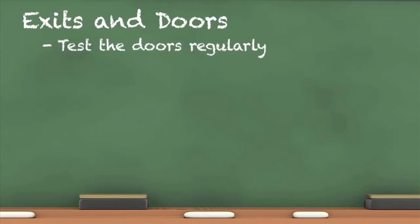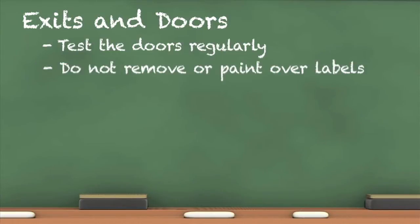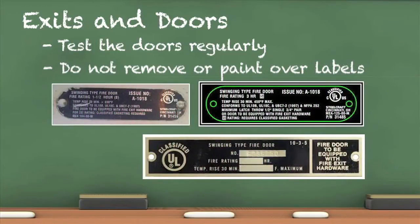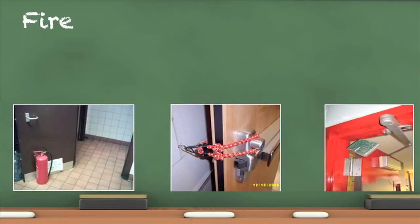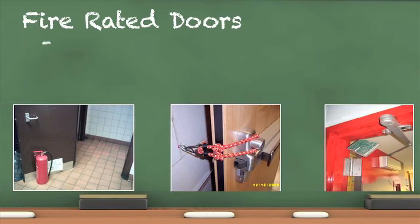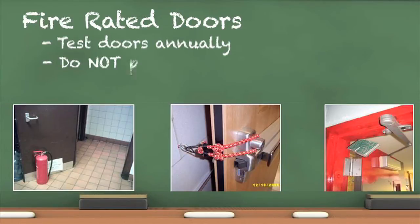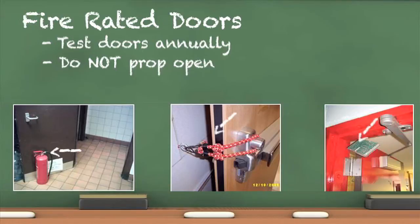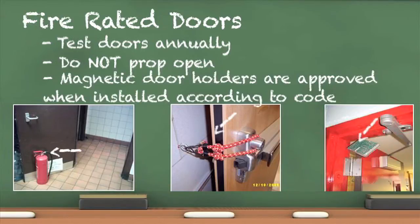Test the doors regularly to make certain they function properly. Do not remove or paint over any fire door labels on the door or door jamb. Fire doors are a very important fire-rated assembly — they help keep smoke and fire compartmentalized, but only when they function properly. Doors should be inspected annually at a minimum and repaired or replaced whenever damaged. Fire doors should self-close and latch and may not be propped open. When installed with permits and according to code, magnetic door holders may be used to hold fire doors open. When devices detect fire or smoke, the magnet releases the door and it should close and latch automatically. Magnetic hold-open devices require periodic testing and maintenance.